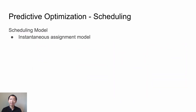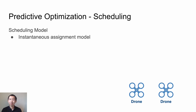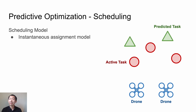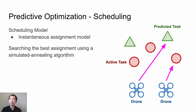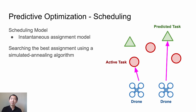The next part is about scheduling. At each time point, we know the states of each drone, the active tasks that need to be completed, and the predictions related to the active tasks. The job of the scheduler is to assign each drone to an active task or a predictive task. In B-Cluster, the scheduler searches for the best assignments using a simulated annealing algorithm. The best assignments are evaluated using a set of utility functions, which are integrated into our platform as plugins. For more details, please check our paper.